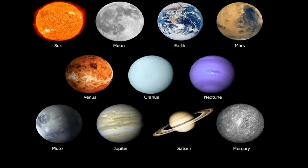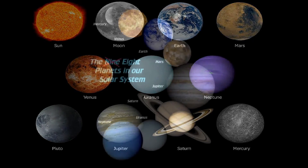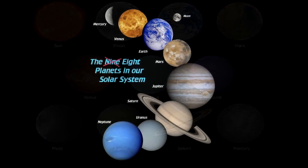We have Mercury, Saturn, Jupiter, Pluto, Neptune, Uranus, Phoenix, Mars, and Earth. But we were told that Pluto doesn't exist anymore. So let's get the definition of these planets.